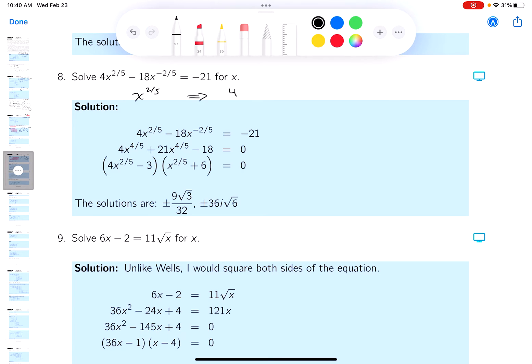Well, you get 4x to the four-fifths minus 18. Well, minus two-fifths plus two-fifths is zero, equals minus 21x to the two-fifths.